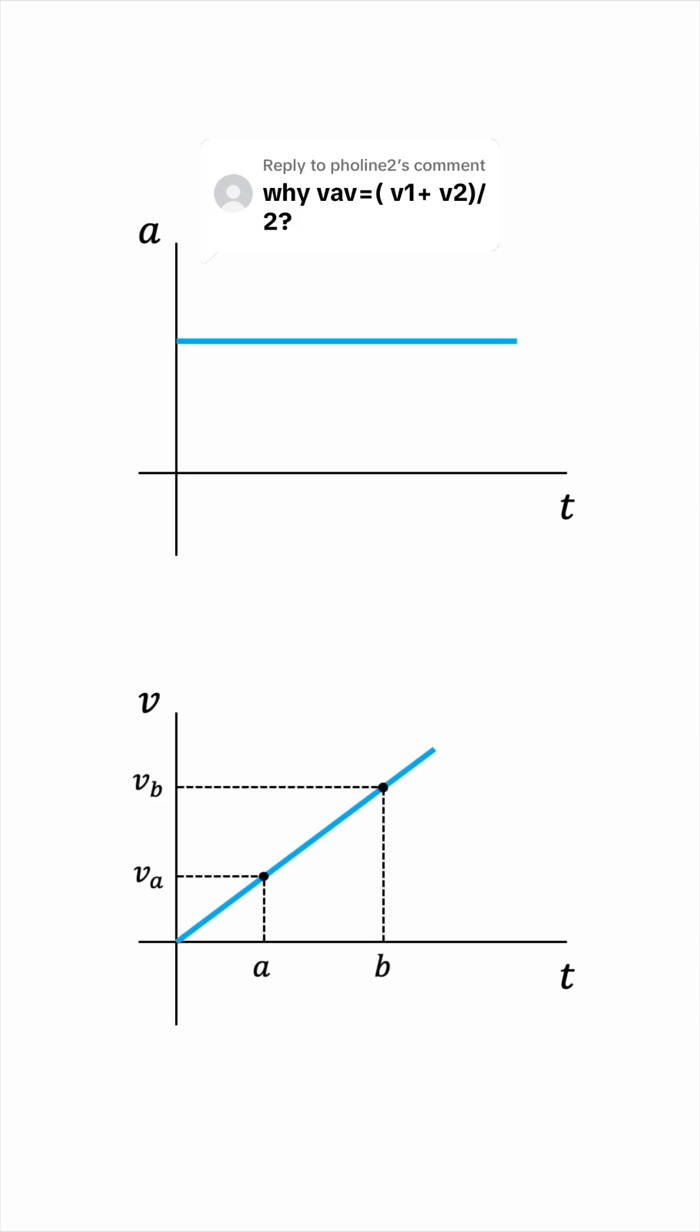Because the graph is linear, it's very easy to see that the average velocity will be the midpoint, the point exactly in the center.